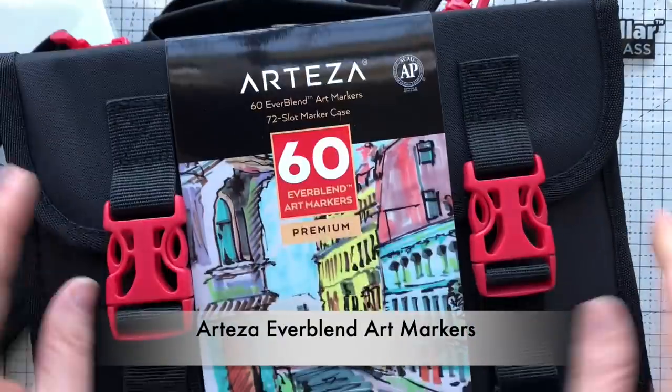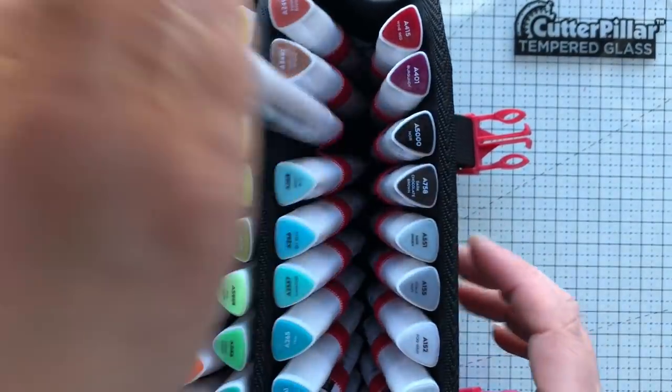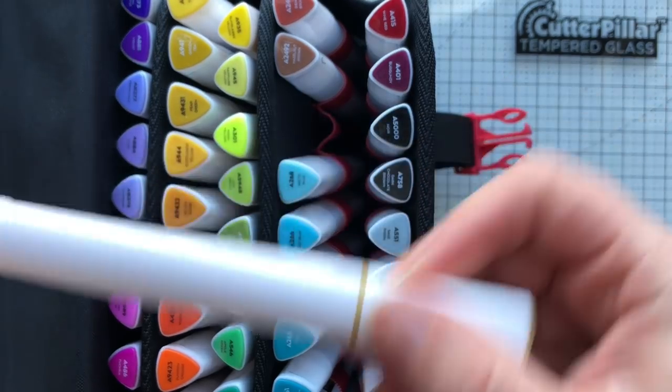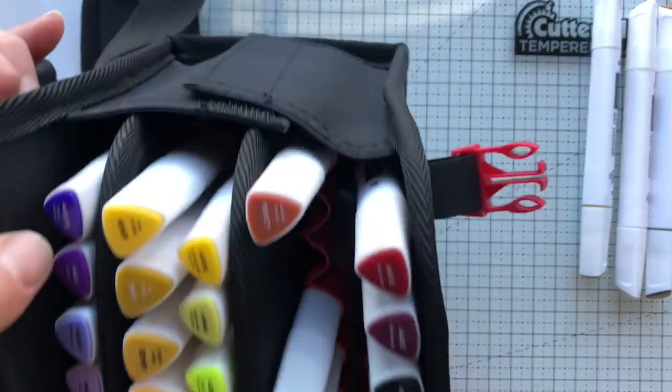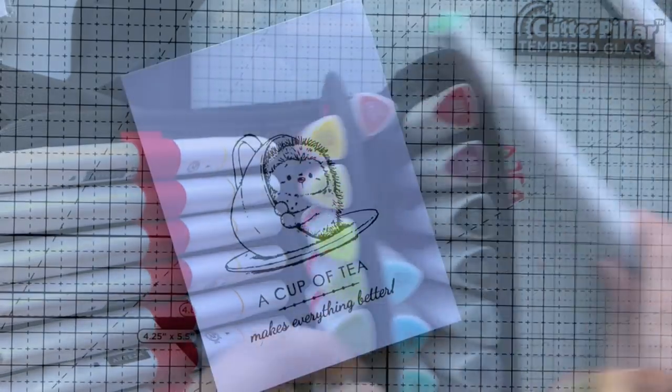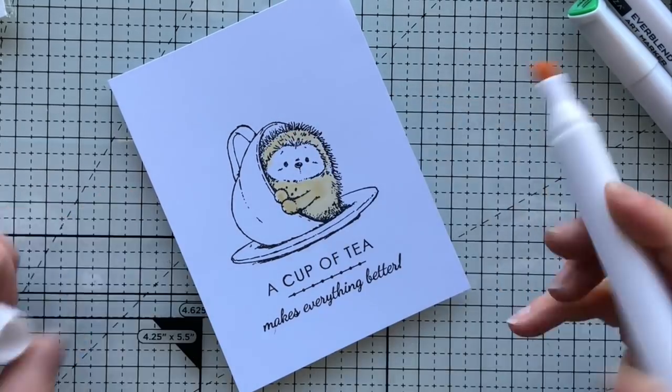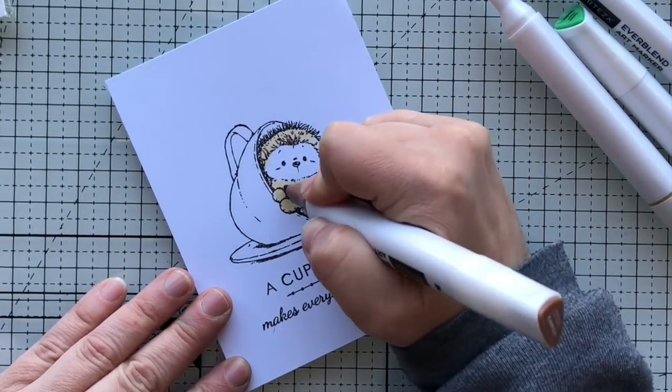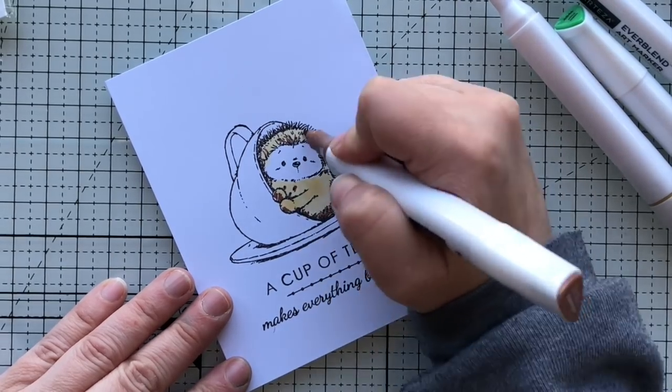You'll notice I haven't done any scoring here - that's because I'm going to score it after I go ahead and get my image down. These are Arteza markers. I will link to them below - they are brand new to me. These are alcohol ink markers, they have a fine tip and a chisel tip. I am not good with alcohol markers, so I don't invest in the high dollar artist grade alcohol markers like the Copics just because they're so expensive.